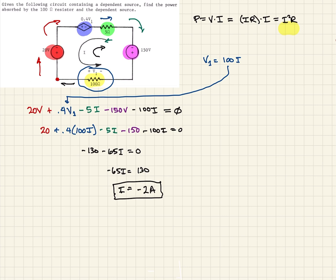Now we have our current here and we have our resistance here. So we can utilize this equation to find our power, which is what we originally asked for. The power in the 100 ohm resistor is just going to be equal to I squared R. We determined that I was negative 2 squared, then times R is 100. When we calculate that out, we should get 400 watts.